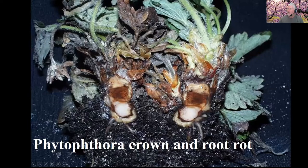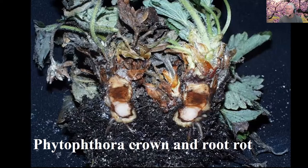To diagnose Phytophthora crown and root rot, cut with a knife through the crown from north to south — if you see reddening inside, that should not be there. All of that crown should be white. When you see reddening, something is wrong, and this is a good diagnostic for Phytophthora. There are some other things that can also cause that kind of reddening — anthracnose causes some reddening with a slightly different look, as does Neopestalotiopsis. So if you're unsure, contact your extension agent to send off samples for the best diagnosis.